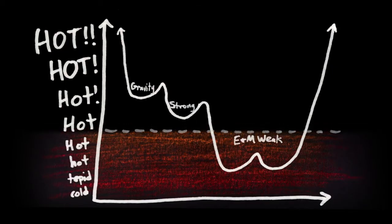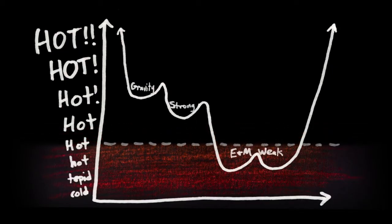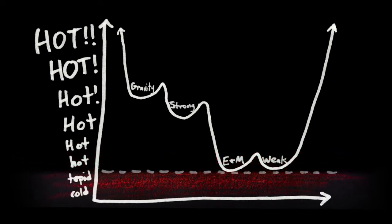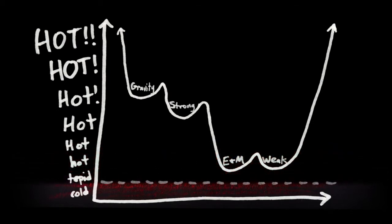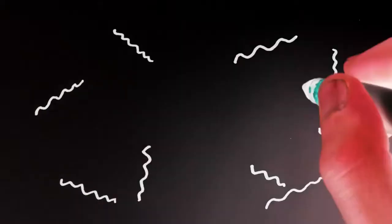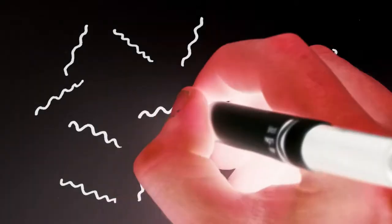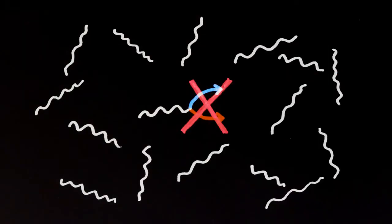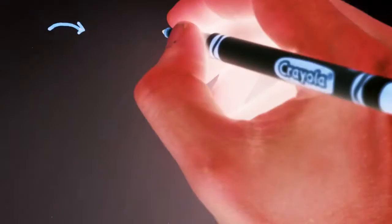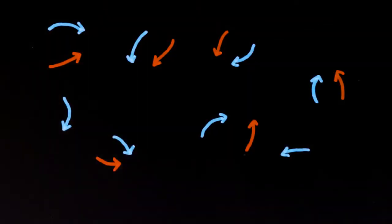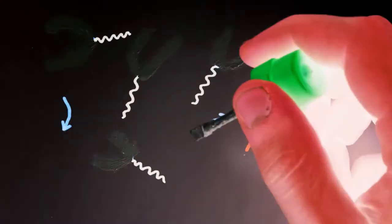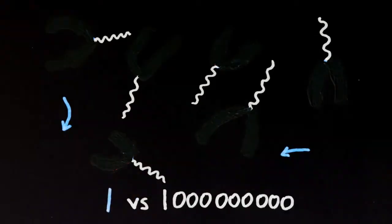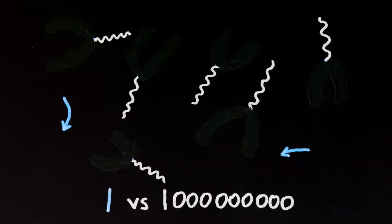As the universe continued to cool, the electro-weak force split into the electromagnetic force and the weak nuclear force, completing the four distinct and familiar forces of nature. While the energy of the photon bath continued to drop, pairs of matter-antimatter particles could no longer be created spontaneously from the available photons. All remaining pairs of matter-antimatter particles swiftly annihilated, leaving behind a universe with one particle of ordinary matter for every billion photons, and no antimatter.